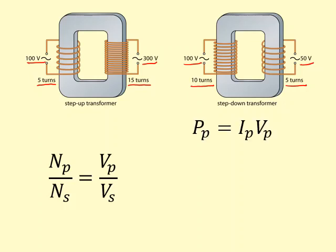The power in the primary can be calculated using P equals IV. The power in the secondary can be calculated using P equals IV as well. Now, the power in the primary won't be 100% transferred to the power in the secondary because there will be some energy loss.